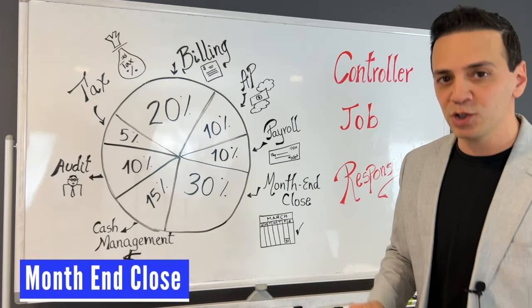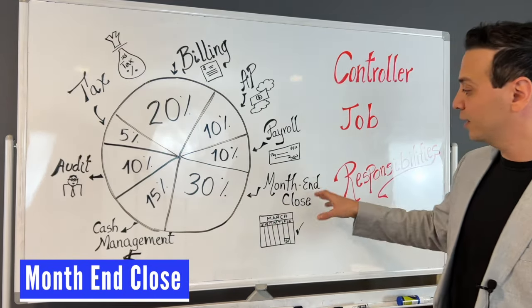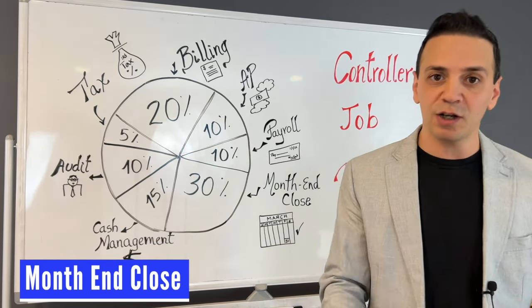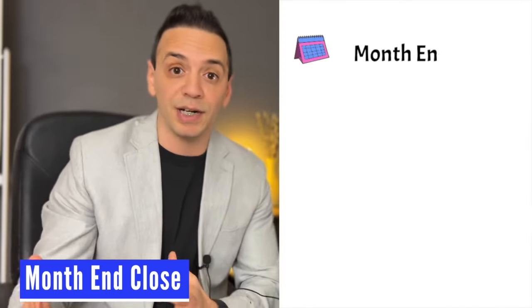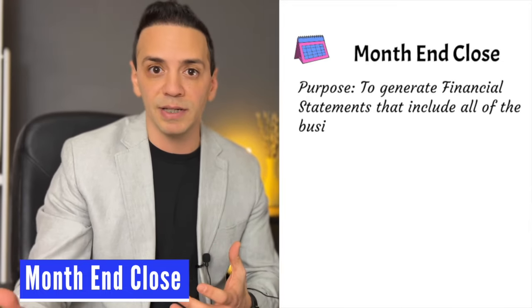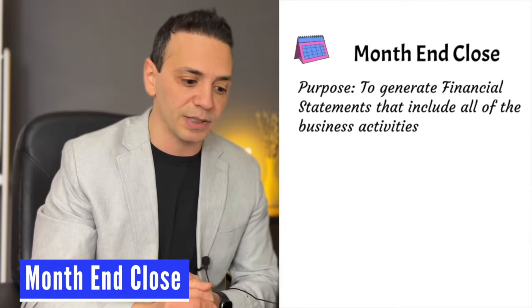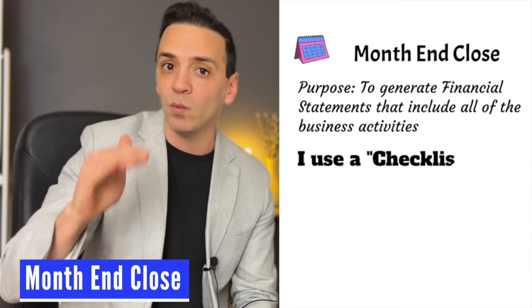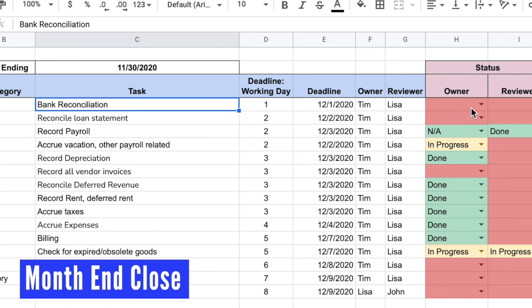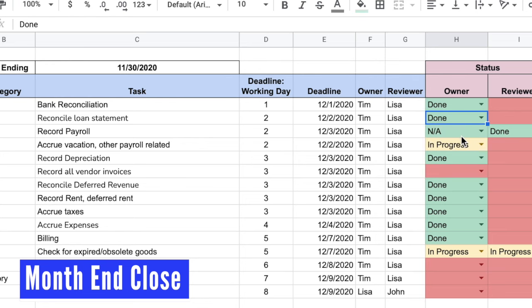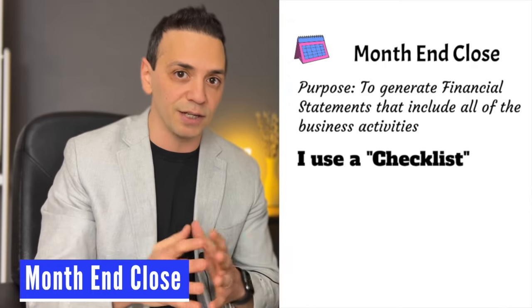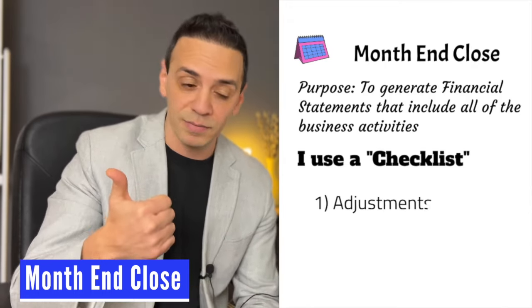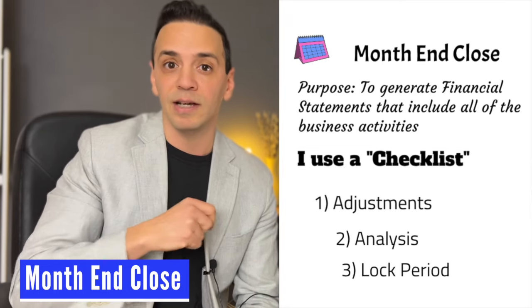Let's begin with the task that takes the most of my time, which is 30% spent on month-end closing — closing the books and preparing the financial statements. The goal and purpose of month-end close is to generate the financial statements and be comfortable that all of the transactions for the business are correctly represented. For that to happen, I have a month-end checklist that I go through one by one at the end of each period. On the checklist, there are three areas I usually have to hit: the first is adjustments, the second is analysis, and the third is locking down the period.